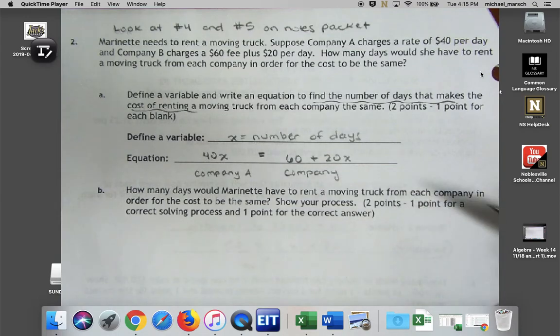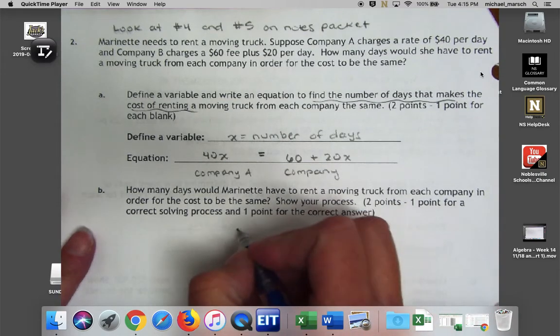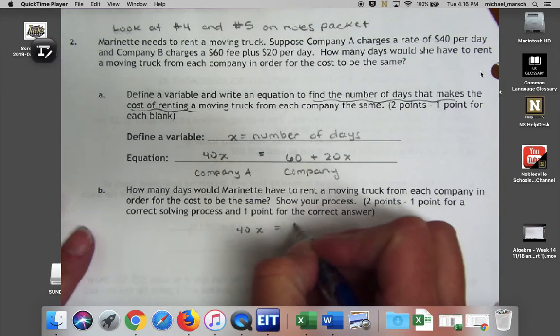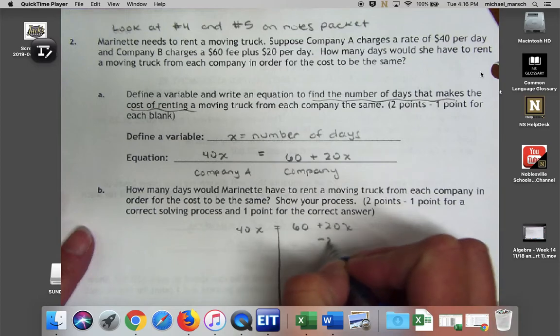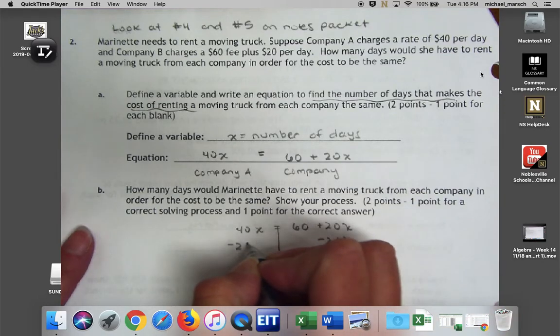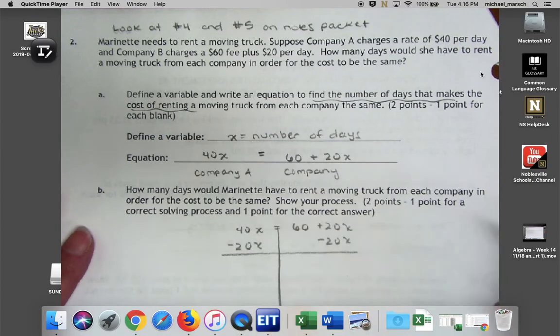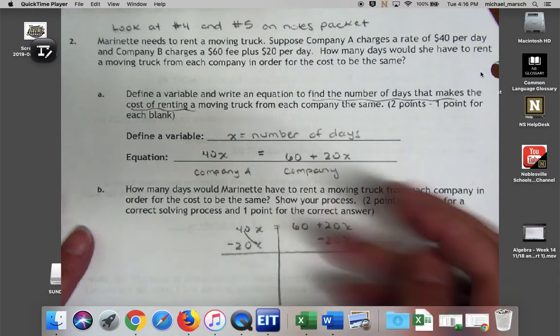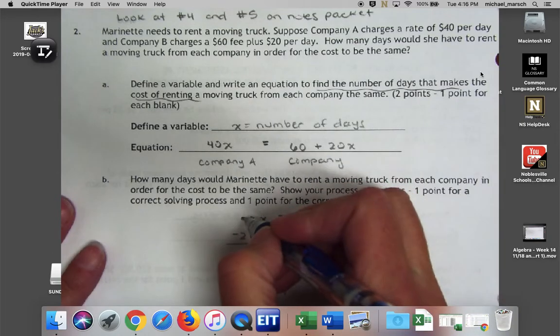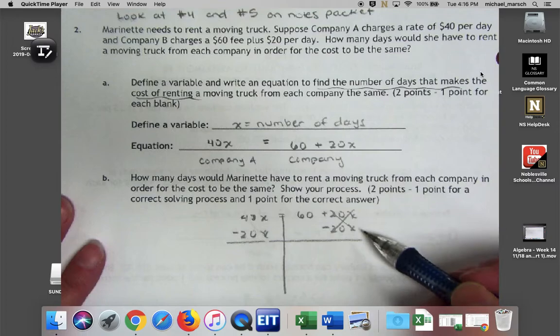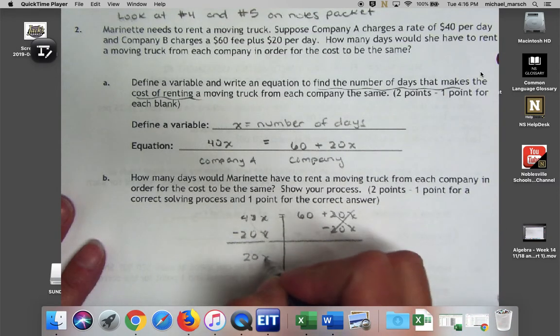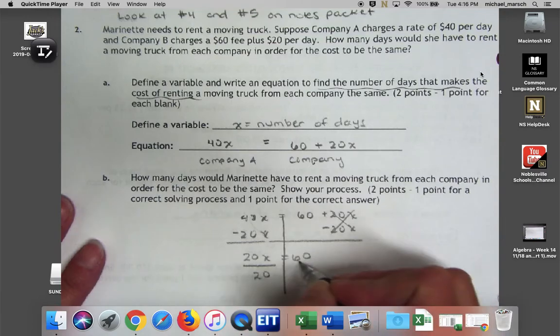So both of them have advantages, kind of like the people working at the different car washes or the different movie stores that you might rent videos. So let's go ahead and solve this: 40x = 60 + 20x. I'm going to draw my wall of equality. I'm going to subtract 20x from both sides because it has to cross to get all the variables on one side.